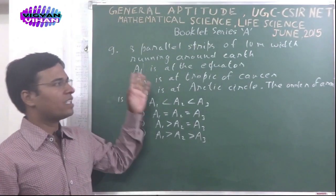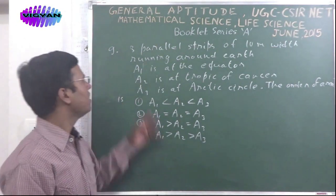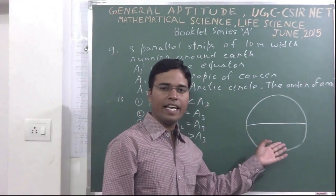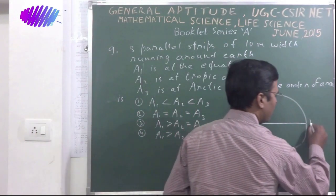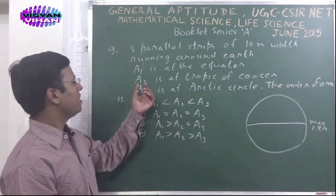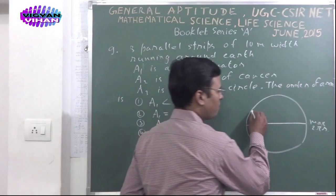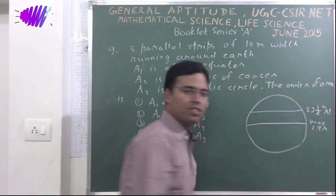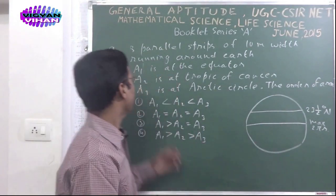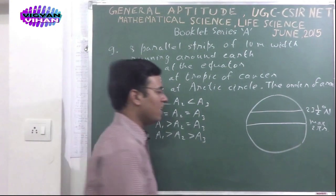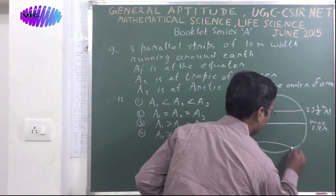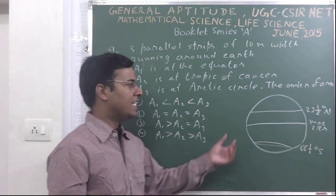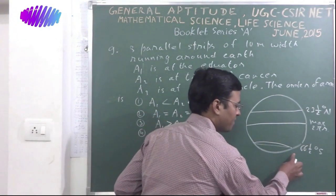In this problem, there are 3 parallel strips of 10 meter width running around the Earth, which are A1 is at Equator. Equator position is middle of the Earth, so it has maximum circumference. The other one is Tropic of Cancer. The Tropic of Cancer is 23.5 degree North, so it has lesser circumference. A3 is at Arctic Circle. The Arctic Circle is situated here at 66.5 degree South.